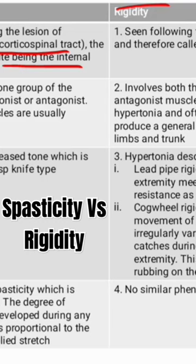Spasticity involves only one group of muscles, either agonist or antagonist — usually anti-gravity muscles are involved. Rigidity, on the other hand, involves both agonist as well as antagonist muscles.